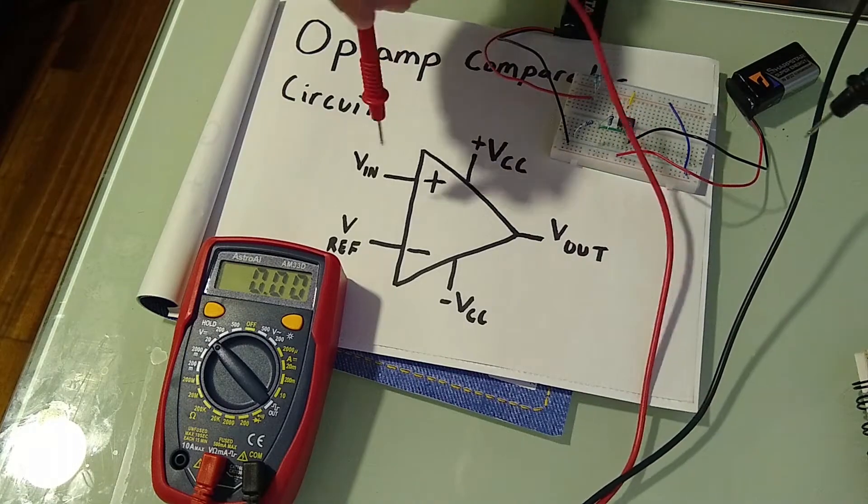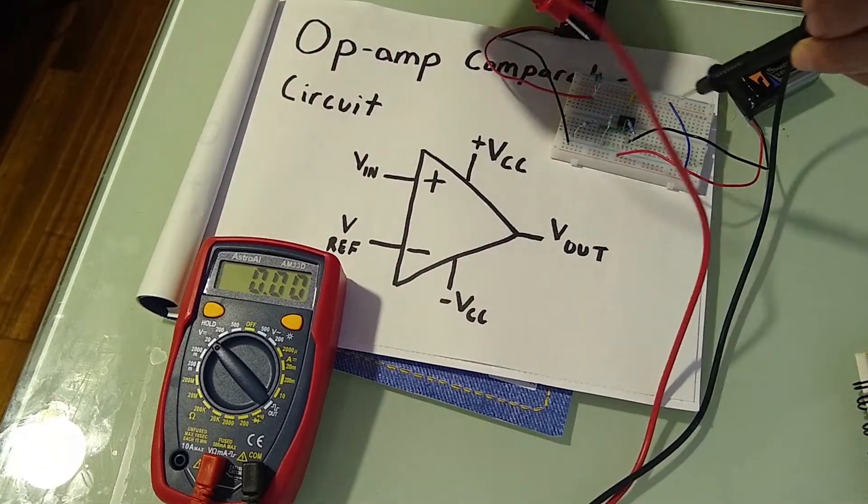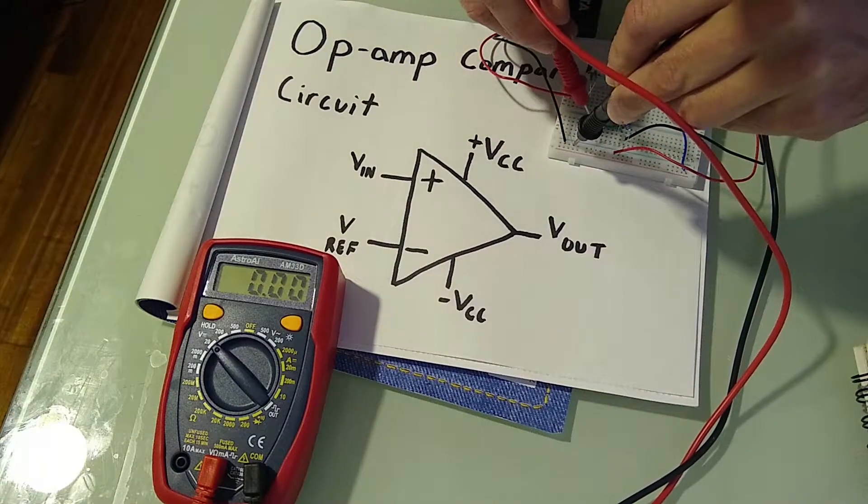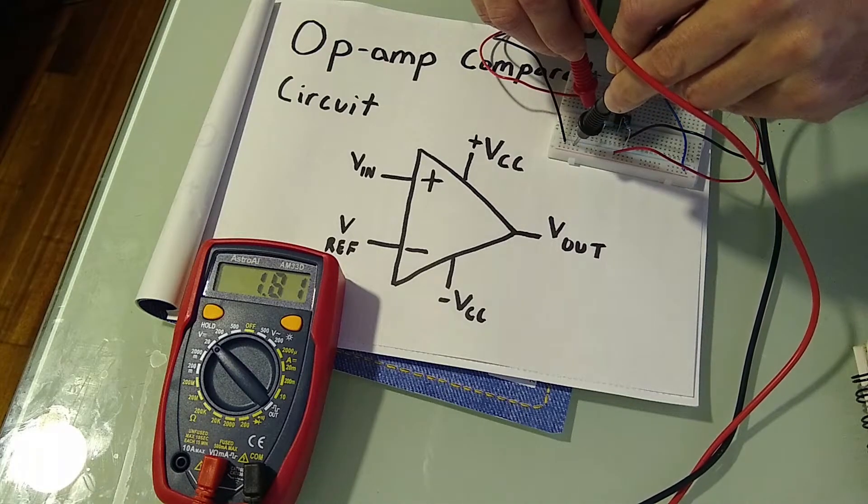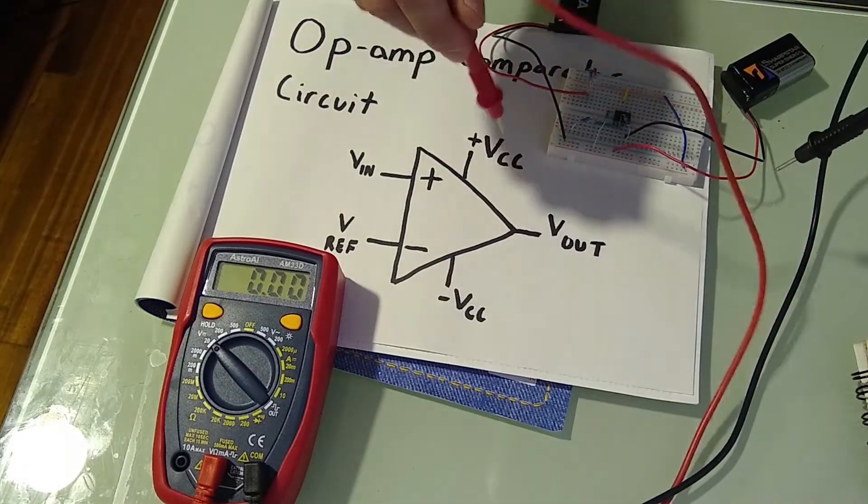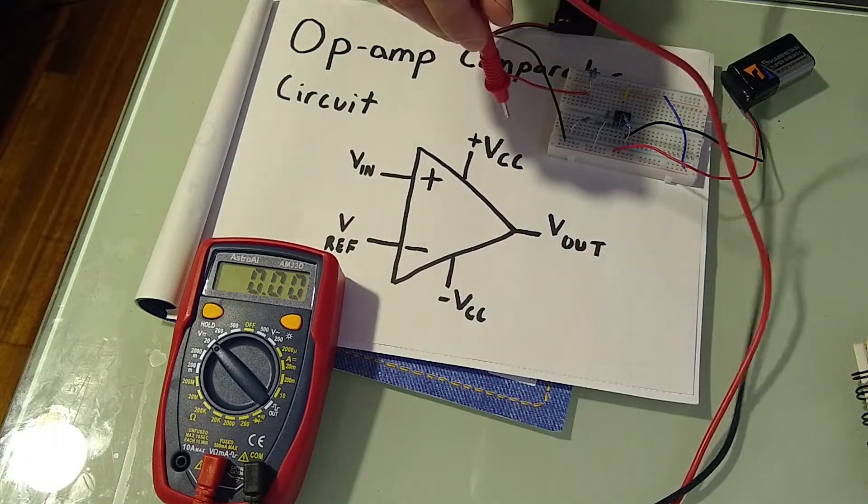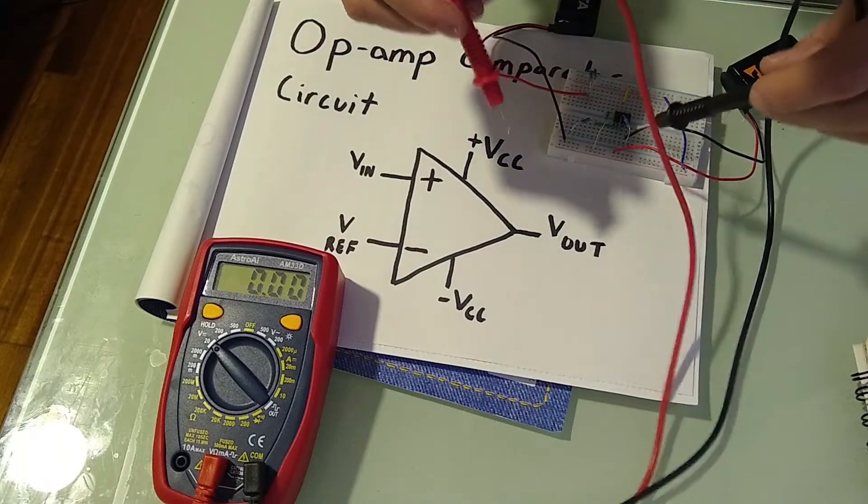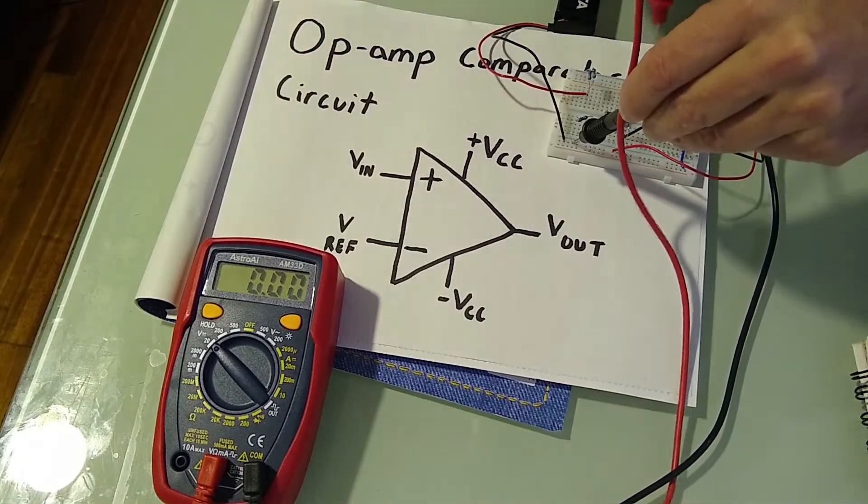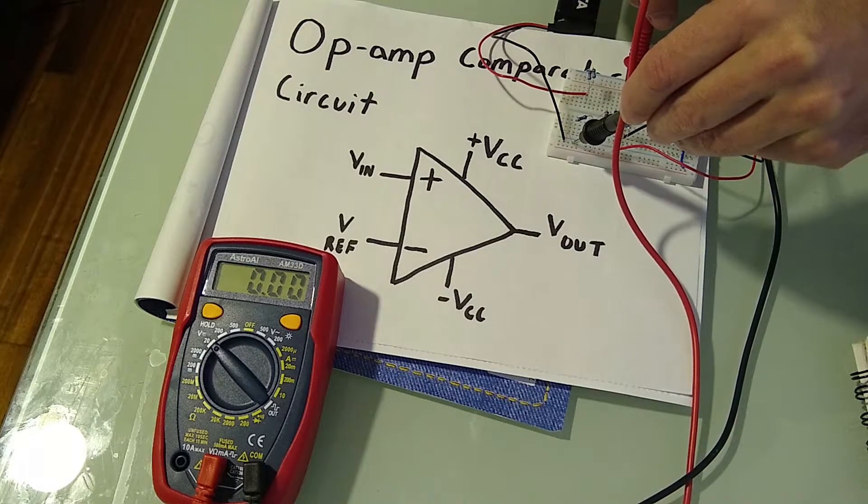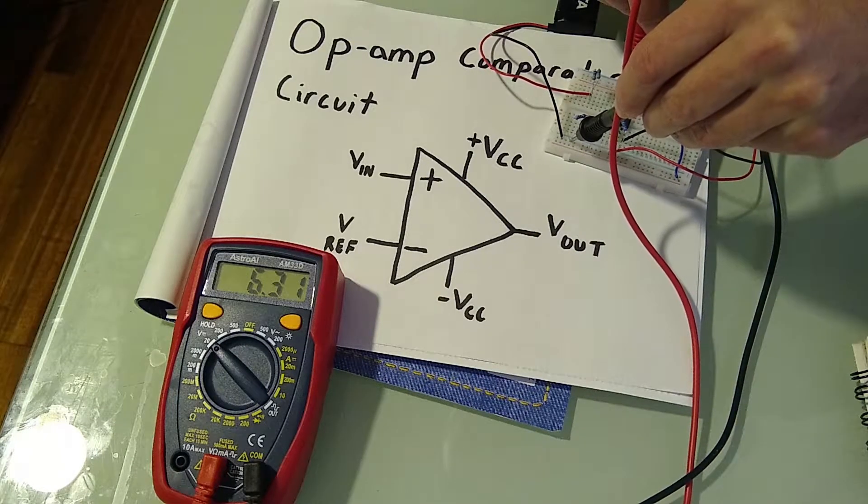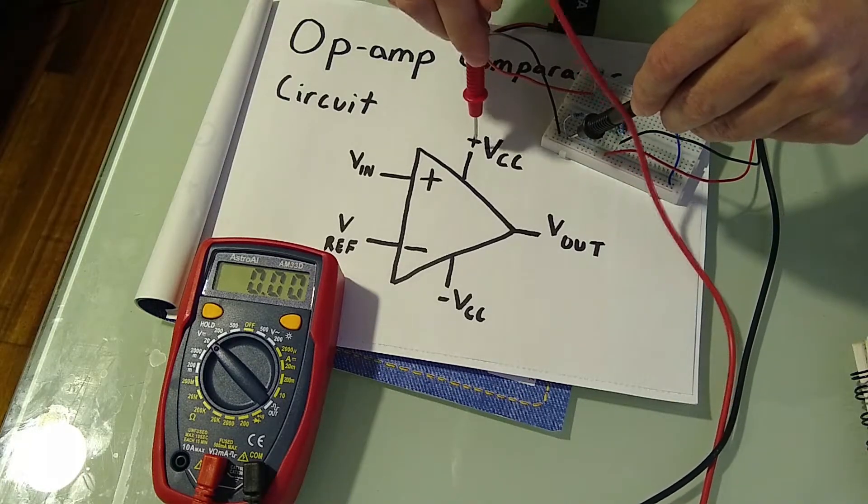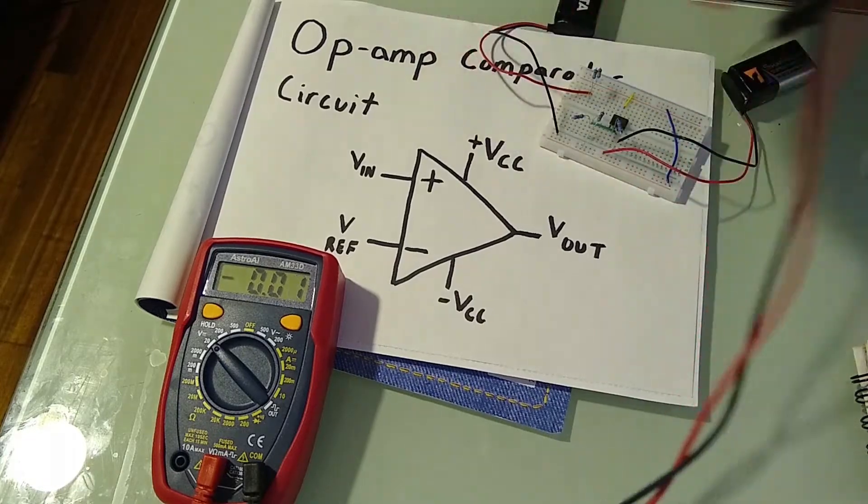So our voltage in is 1.82 volts. Therefore, our voltage out should be equal to our positive VCC, because 1.82 volts is greater than 0 volts. So let's test that. And it is indeed 6.31, which is almost equal to our positive 6.82 voltage in at this supply rail.